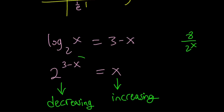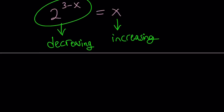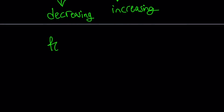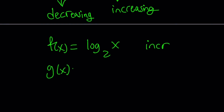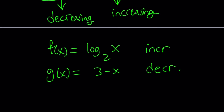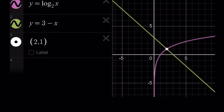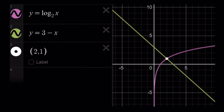Obviously x is positive because this is always positive. You could also look at it this way: f of x equals log base 2 of x is also increasing, and g of x equals 3 minus x is always decreasing. They will have a single intersection point. And here's the graph — these two functions meet at a single point, and that happens at x equals 2.